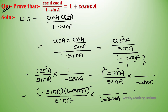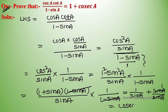We split the fraction: 1 upon sin A plus sin A upon sin A. Here sin A cancels in the second term, giving 1 upon sin A plus 1, which equals cosec A plus 1. Hence proved.